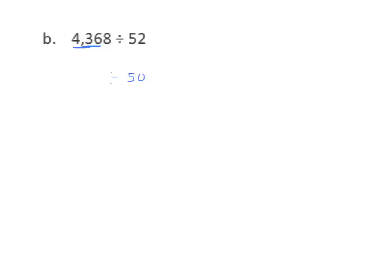I'm going to have to find a number that works with that. I'm going to think of my multiples of 5, and try 400 tens divided by 50. I can decompose that: 400 divided by 10 divided by 5. 400 divided by 10 is 40, divided by 5 equals 8. And that would be 8 tens.